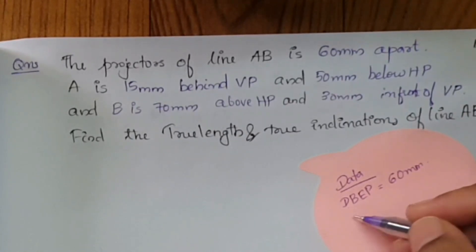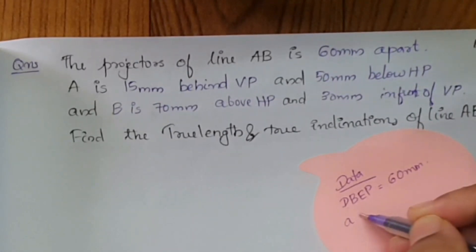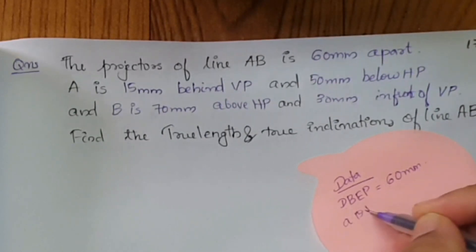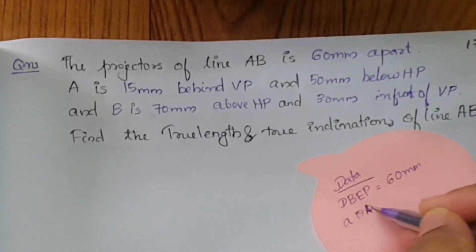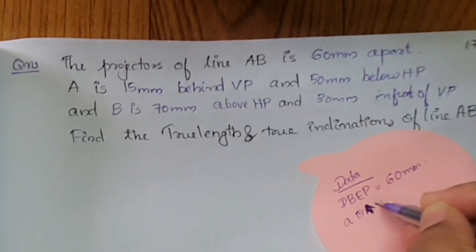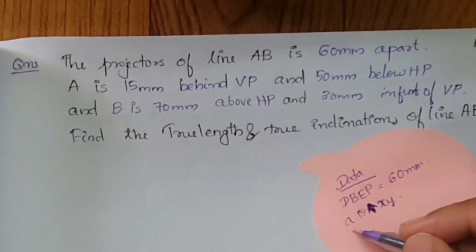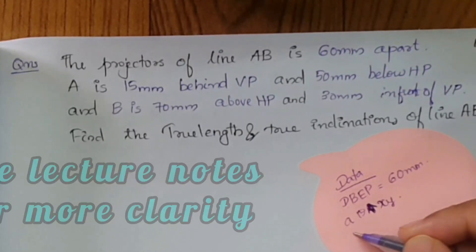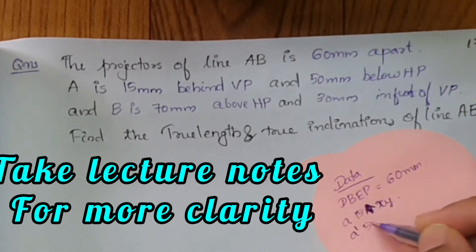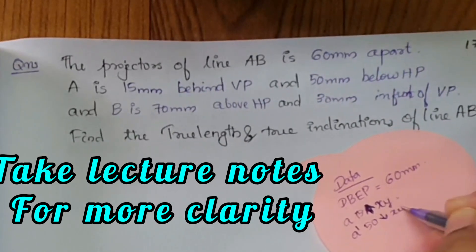Point A is 15 mm behind VP, so A' (top view) is 15 mm above the XY line. And A dash (front view) is 50 mm below XY, since A is 50 mm below HP.